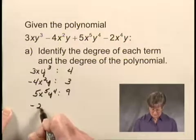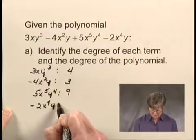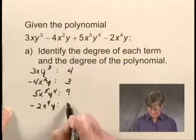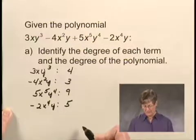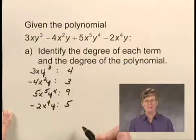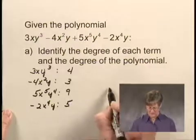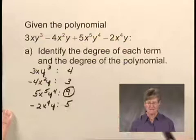The last term is negative 2x to the fourth y. Adding the exponents, we get 4 plus 1, or 5. So these are the degrees of the terms. The degree of the polynomial is the degree of the term of highest degree, and that is 9. So the degree of the polynomial is 9.